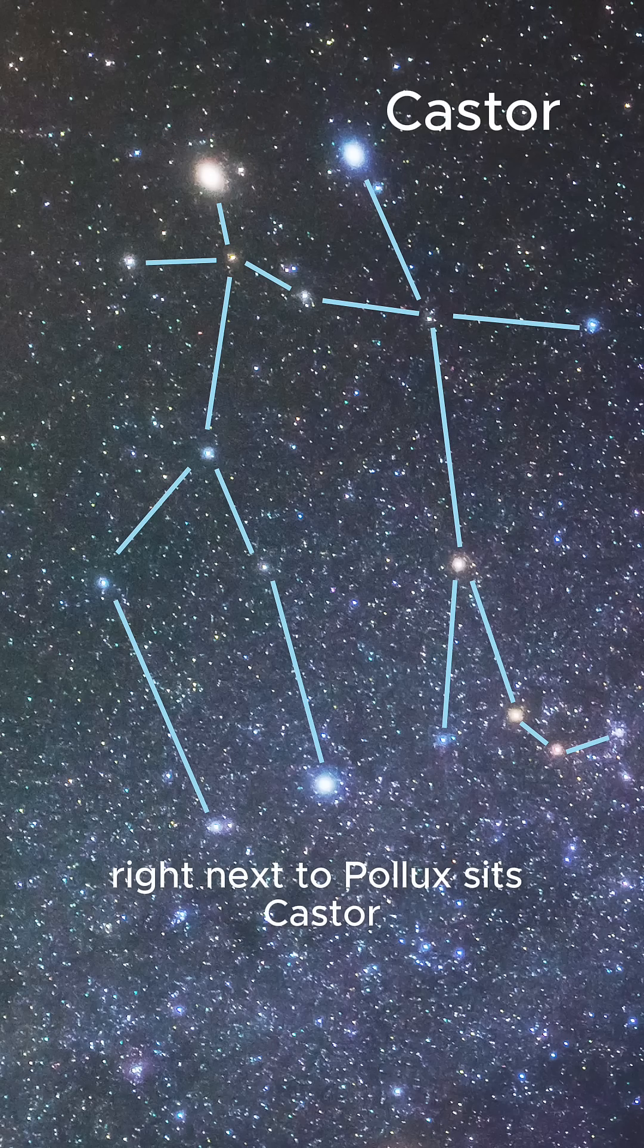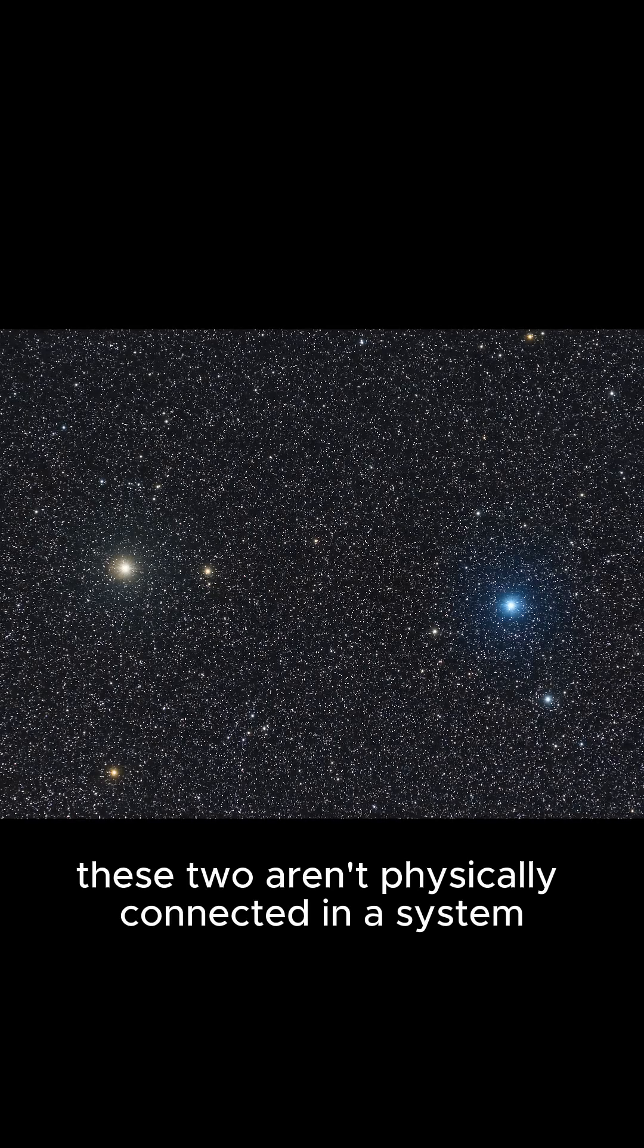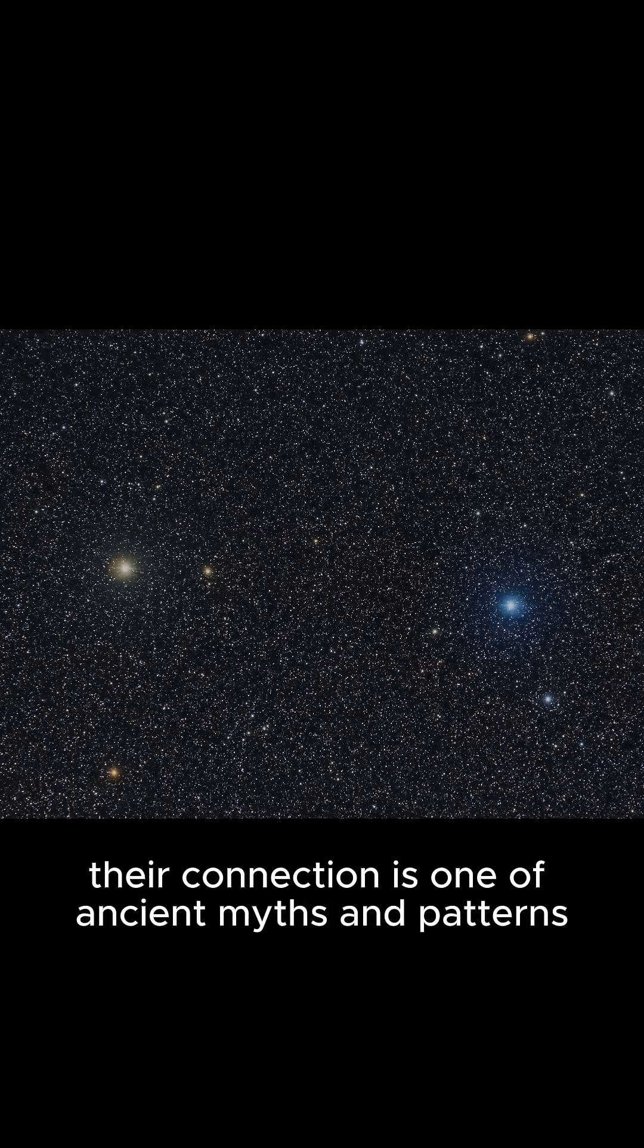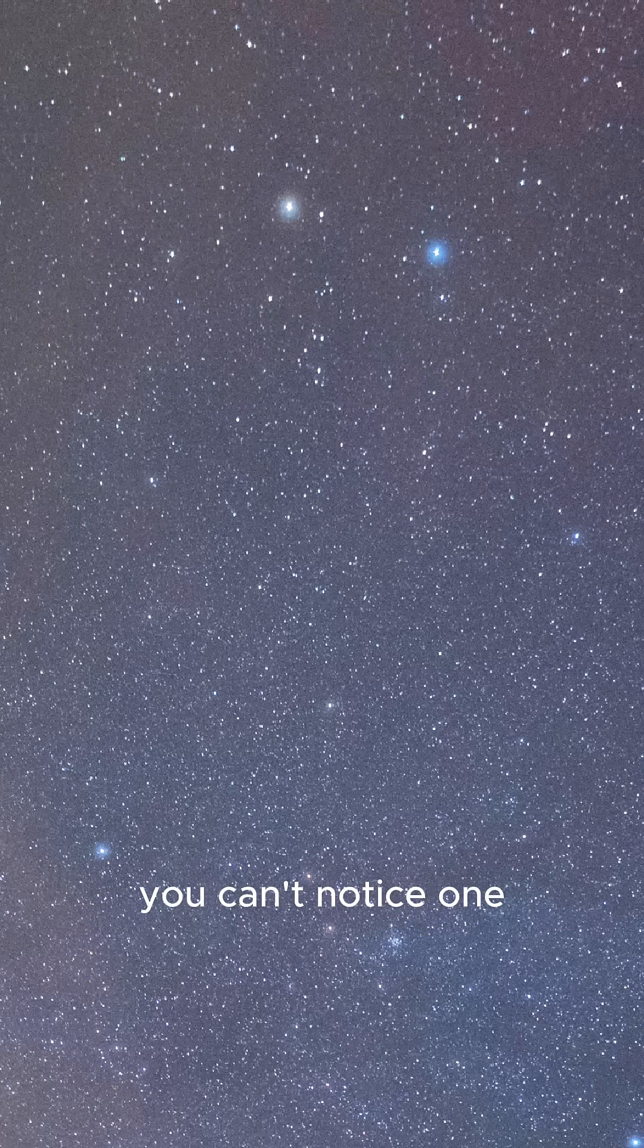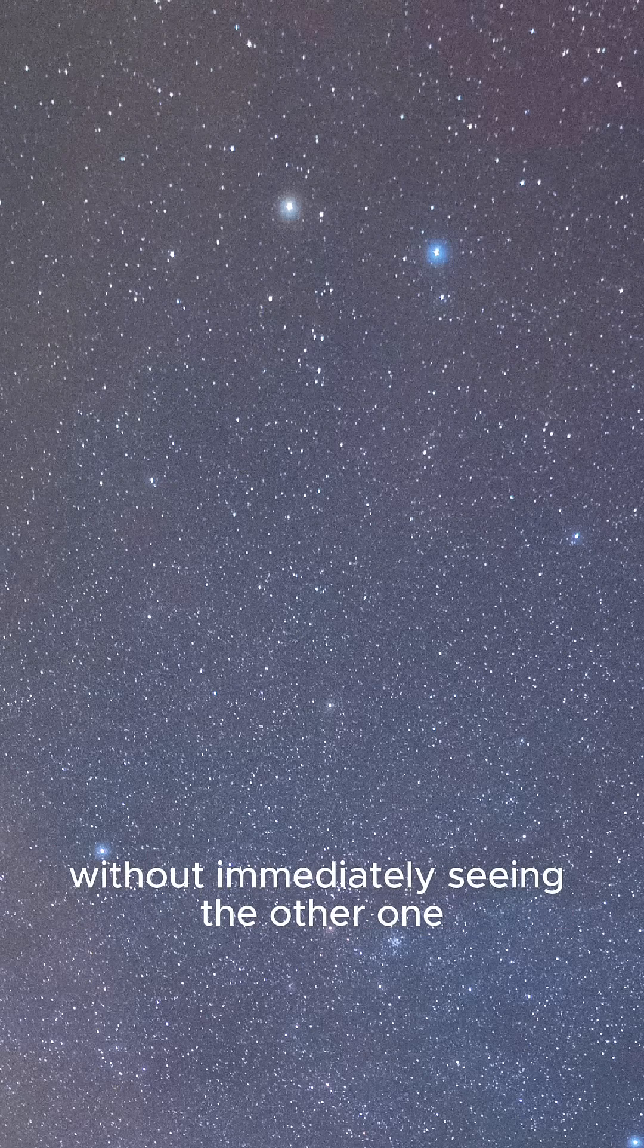Right next to Pollux sits Castor. These two aren't physically connected in a system. Their connection is one of ancient myths and patterns. You can't notice one without immediately seeing the other one.